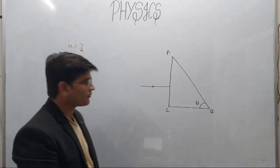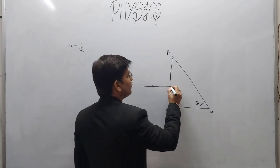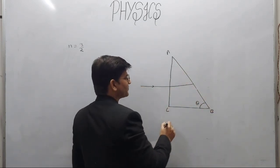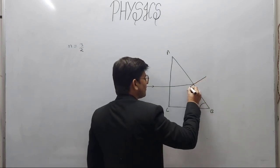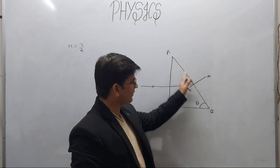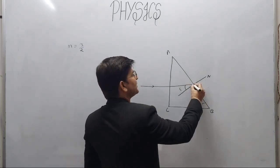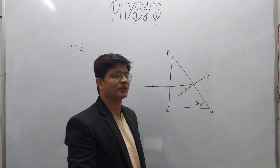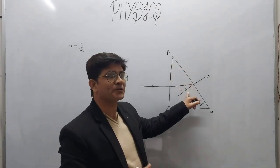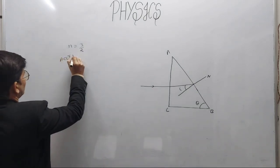Since the ray strikes surface AC normally, it does not bend in any direction — it goes straight up to the surface AB. Now we draw a normal on the surface AB. This normal gives us the angle of incidence of this light ray on surface AB. For the light ray not to pass through, it must be reflected back in the same medium. This is the condition of total internal reflection, and for this, the angle of incidence at surface AB must be greater than the critical angle of the glass medium.